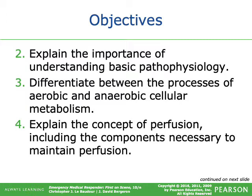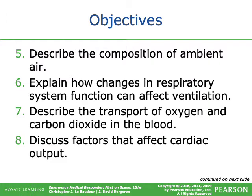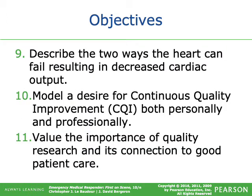We're also going to explain the importance of understanding basic pathophysiology, differentiate between aerobic and anaerobic cellular metabolism, explain the concept of perfusion and the components necessary to maintain it, describe the composition of ambient air — which is the air we're breathing right now — explain how changes in respiratory system function affect ventilation, describe oxygen and carbon dioxide transport in the blood, discuss factors affecting cardiac output, and describe the two ways the heart can fail resulting in decreased cardiac output.